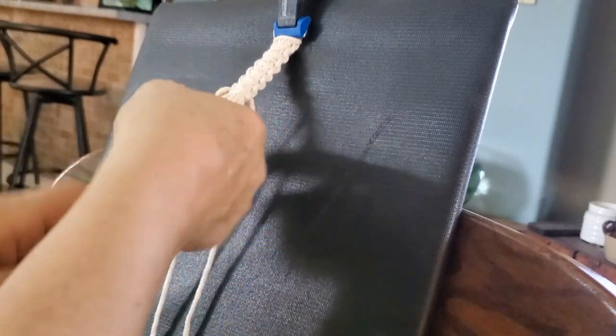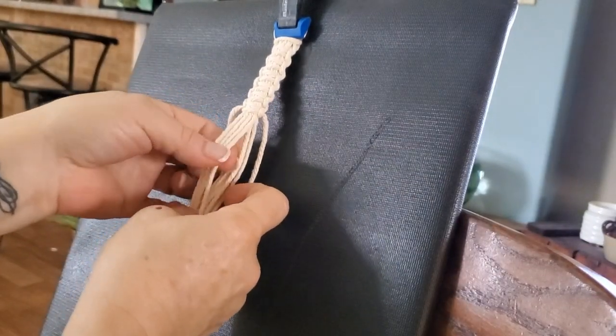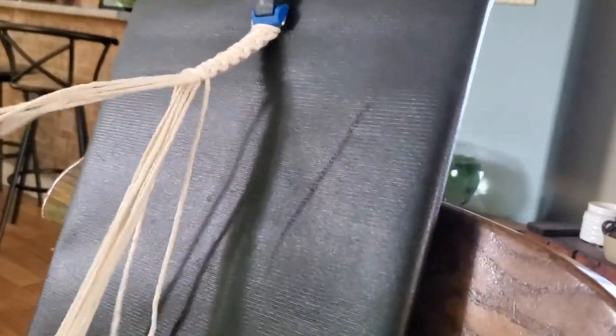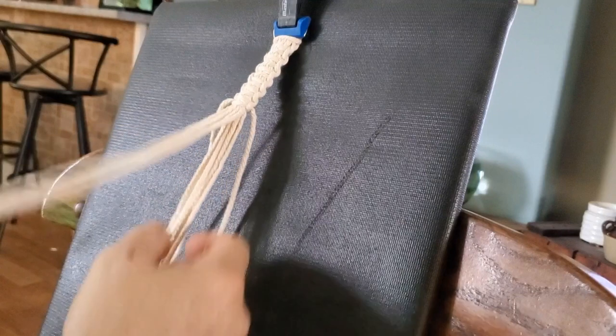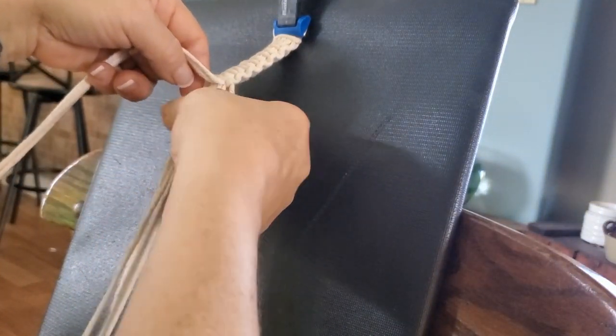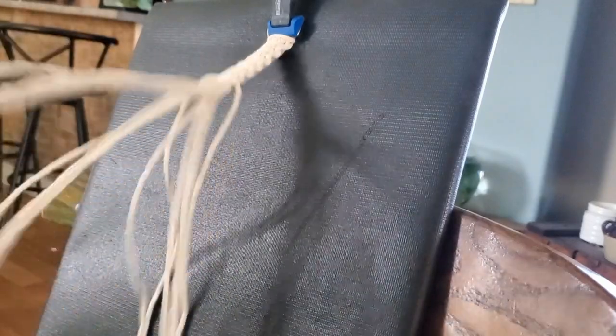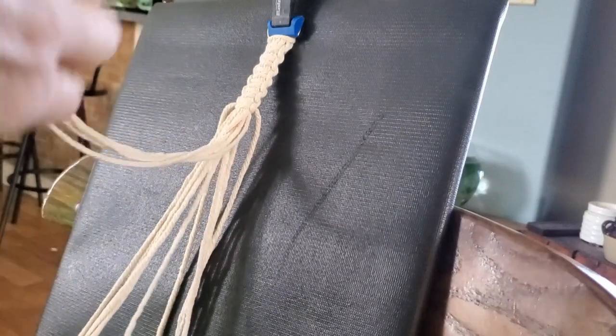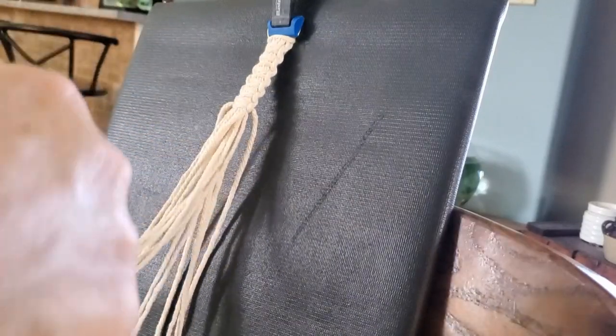Now we'll begin by separating the cords into three groups of four. Now pick the cords that are closest together to make each grouping. Then flip the cords that are not in use to the back of the board just to keep them out of your way. Now remember, the two short pieces will be worked into the knots to hide them as we go along.